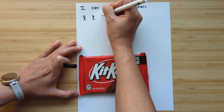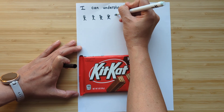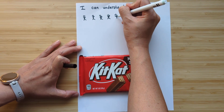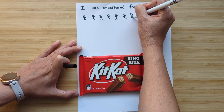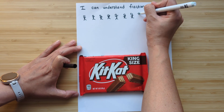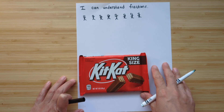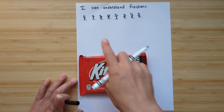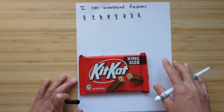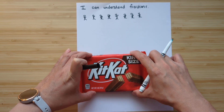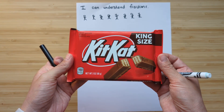So there's you, your first friend, your second friend, your third friend, your fourth friend, your fifth friend, your sixth friend, and your seventh friend — you and seven friends. So there's a total of one, two, three, four, five, six, seven, eight. There are eight friends that want an equal part of this KitKat.